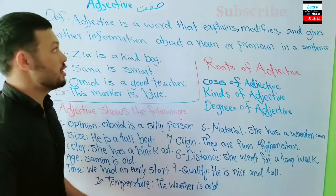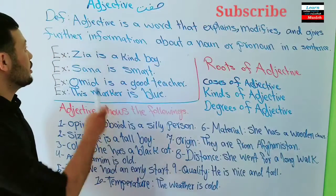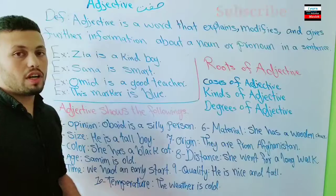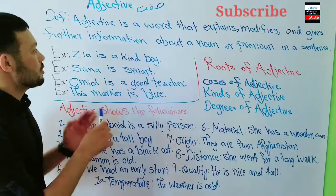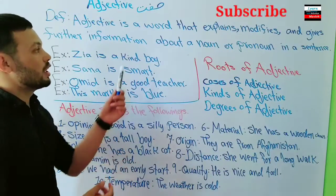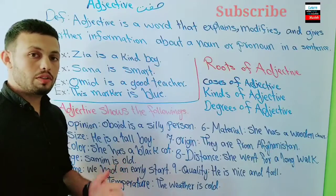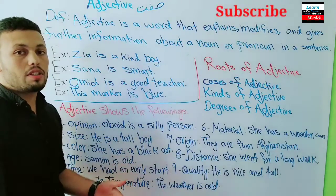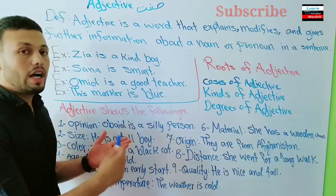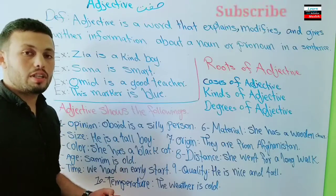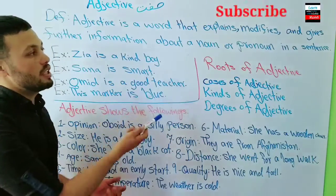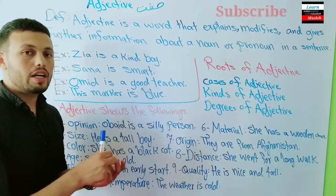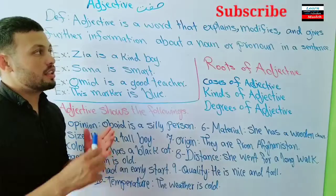An adjective — or in Dari we say 'Saffat' — is a word that explains, modifies, or gives further information about a noun or pronoun in a sentence. In Dari: Saffat yak kalima ast ke touzeh mi-ta ya tausif me-kona, wa ham malumat biechtar rerae me-kona dar maure esm wa ya zamir — meaning it describes the noun or pronoun in a sentence.